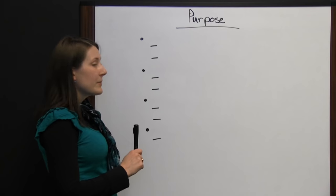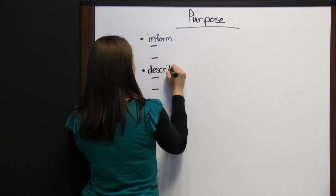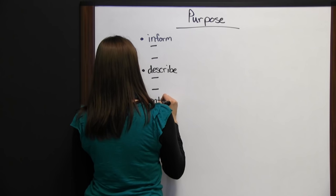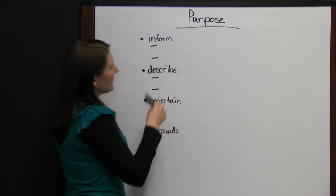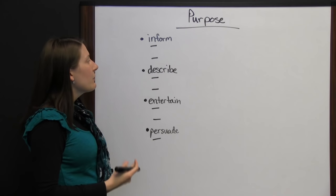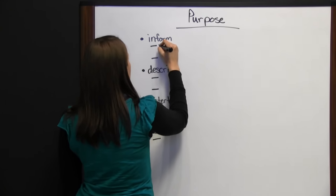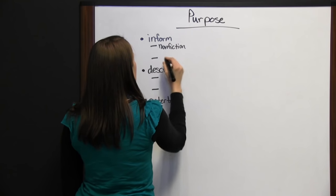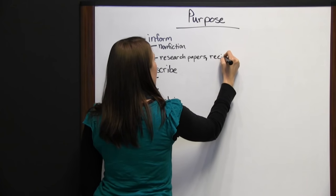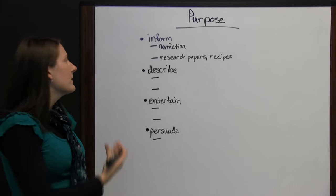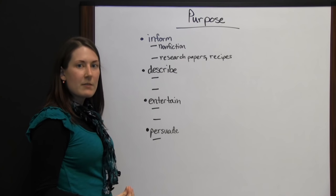An author writes with one of four purposes in mind: to inform, to describe, to entertain, or to persuade. Once we figure out which of these four purposes the author is writing with, we will be able to better understand their motivations. If the author is writing to inform, it will probably be nonfiction — examples include research papers or recipes, where the author is informing you of something or how to do something.